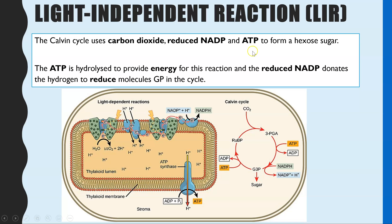The key molecules involved are carbon dioxide, and then two molecules which were made in the light dependent reactions: reduced NADP and ATP. These three molecules are used within the Calvin cycle to form a hexose sugar, which is the end product of photosynthesis — for example, glucose. The ATP is hydrolyzed, releasing energy, and the reduced NADP donates a hydrogen atom, which reduces the molecule that picks it up.